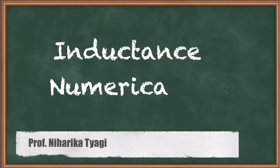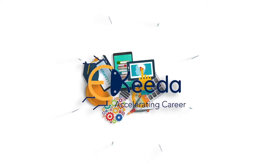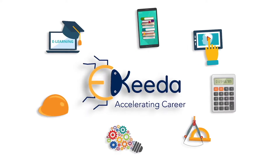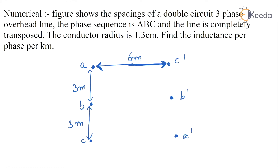Hello friends, welcome to eKIDA — another numerical on inductance. The question is: a figure shows the spacing of a double circuit three-phase overhead line. The phase sequence is A, B, and C, and the line is completely transposed.